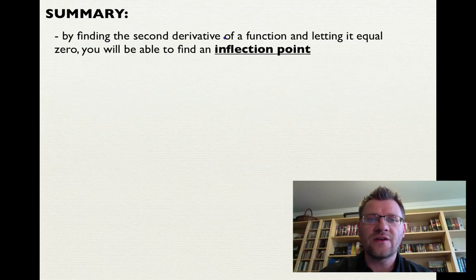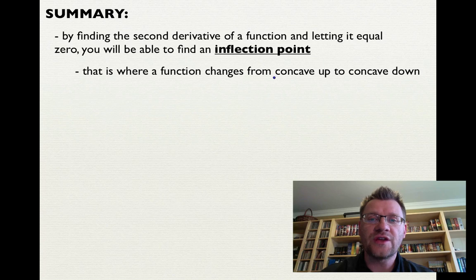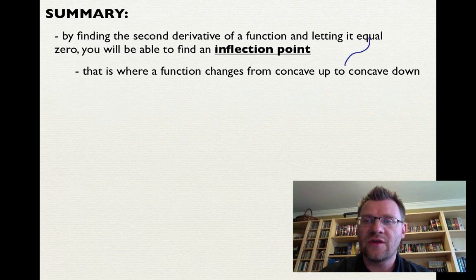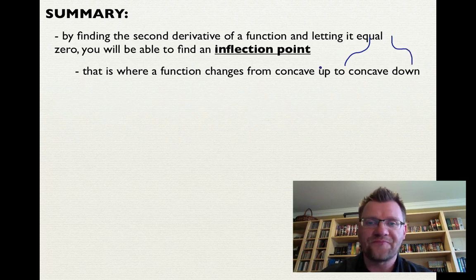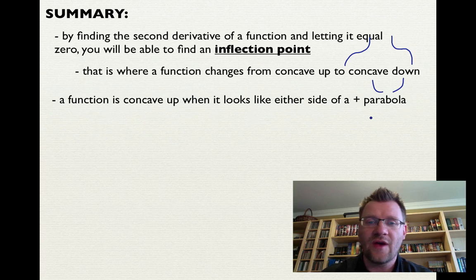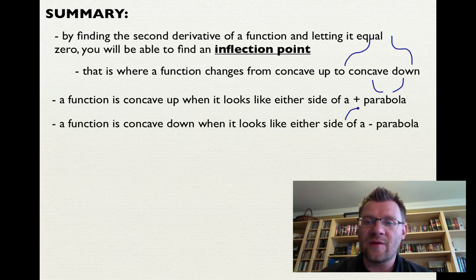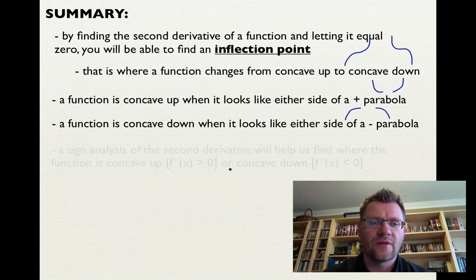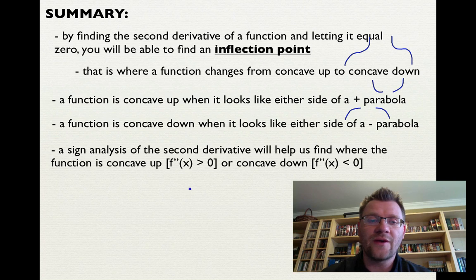In summary: by finding the second derivative and setting it equal to zero, you find an inflection point — where a function changes from concave up to concave down, or from concave down to concave up. A function is concave up when it looks like either side of a positive parabola, and concave down when it looks like either side of a negative parabola. A sign analysis of the second derivative tells you where the function is concave up (second derivative greater than zero) or concave down (second derivative less than zero).